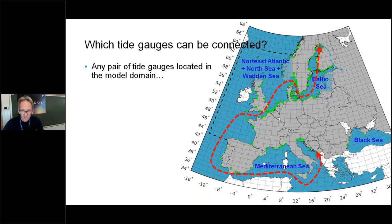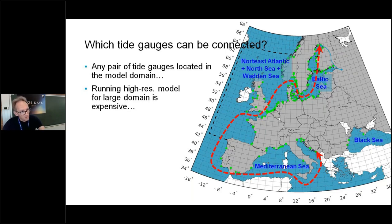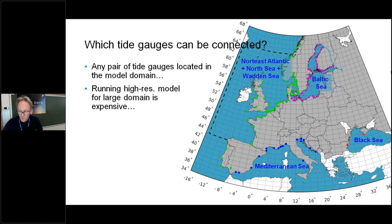Of course, running such a high resolution model is computationally very expensive, and there are models available covering this area, but high resolution models with good accuracy that are well calibrated is a different story. So what we did was basically split the model domain into subdomains. For this study, we have access to a model covering the Northeast Atlantic, North Sea, and Baltic Sea, maintained and developed by Deltares. In a later stage, we also got access to a model that was developed for the Baltic Sea from our colleagues at Tallinn Technical University.